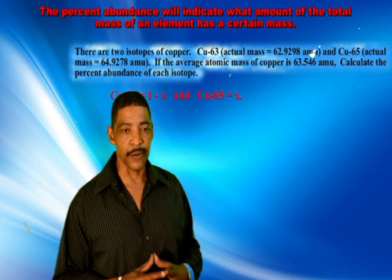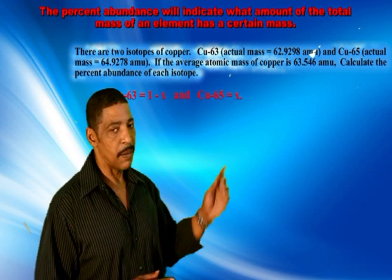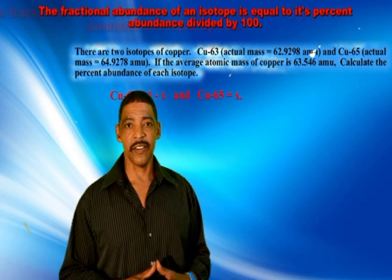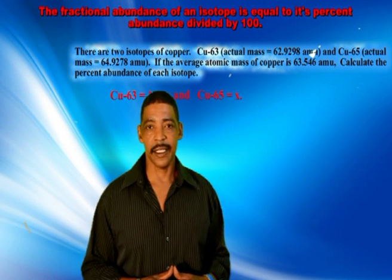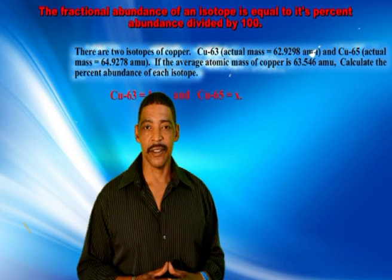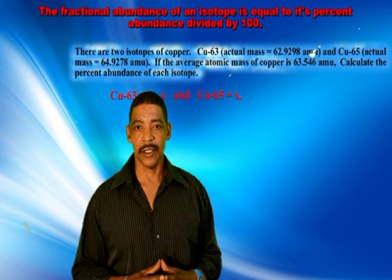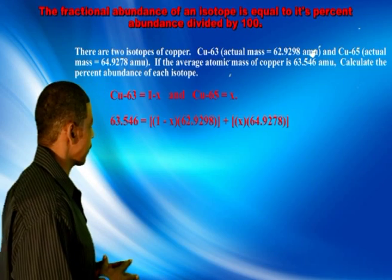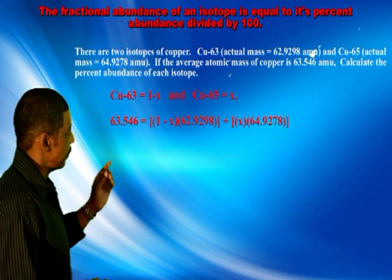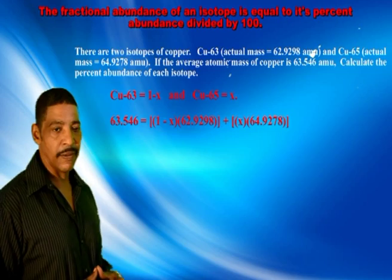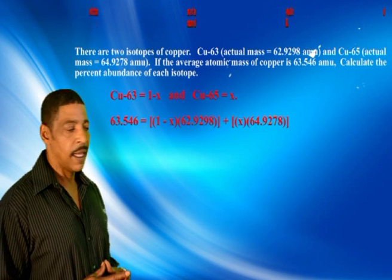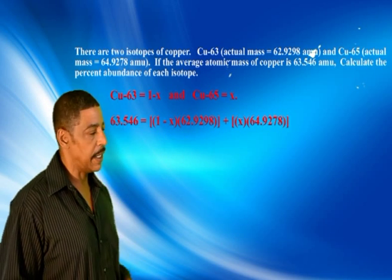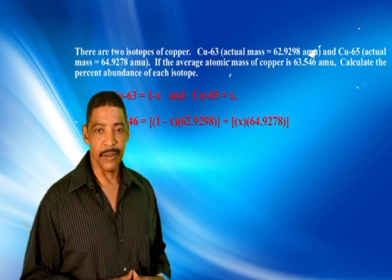Using this information we may solve for x, which represents the fractional abundance of copper-65. To determine the percent abundance of copper-65, we simply multiply its fractional abundance times 100. The average atomic mass of copper, 63.546, is equal to (1 minus x) times 62.9298 amu.